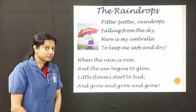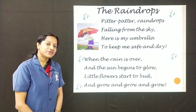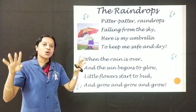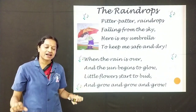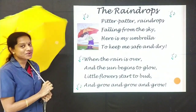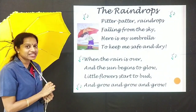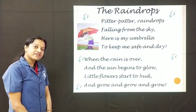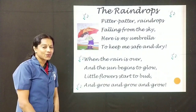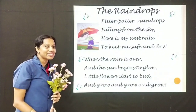Now let me sing it for you children. The Raindrops. Pitter patter, raindrops falling from the sky. Here is my umbrella to keep me safe and dry. When the rain is over and the sun begins to glow, little flowers start to bud and grow and grow and grow.